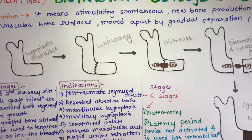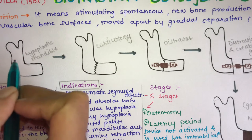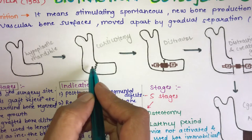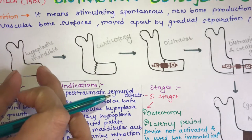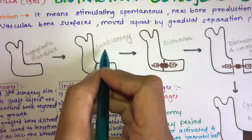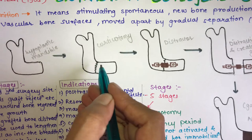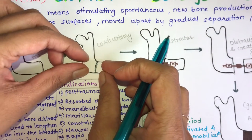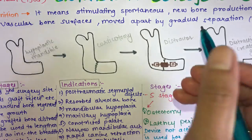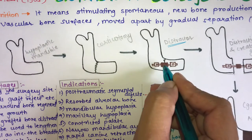We will understand this definition with the help of a diagram. Here we have a hypoplastic mandible — the mandible is small in size and we want to increase it. In distraction osteogenesis, we first fracture the bone by corticotomy because the intact mandible is difficult to increase in size otherwise. Once fractured, the bone becomes mobile and easy to manipulate. Then we start distraction using a device known as a distractor.